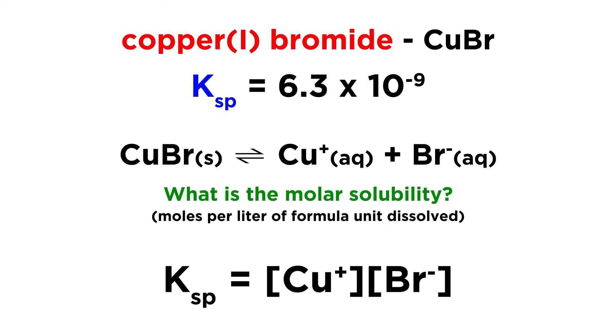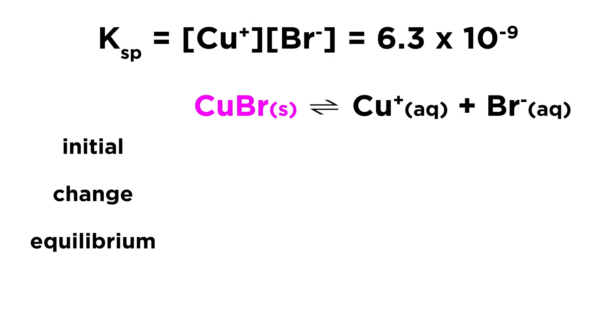To find this, we can write the solubility product expression and use this to construct a simple ICE chart. In this, we will not list any values for copper bromide, as this is a solid. The ions themselves will start at zero. The change will be X because of the one-to-one ratio, and this means that the equilibrium concentrations of the ions will also be equal to X.